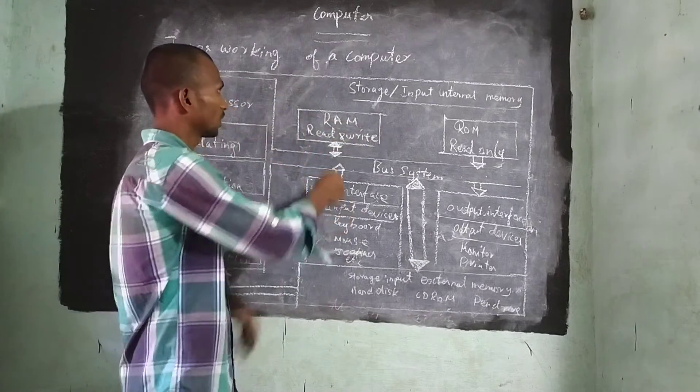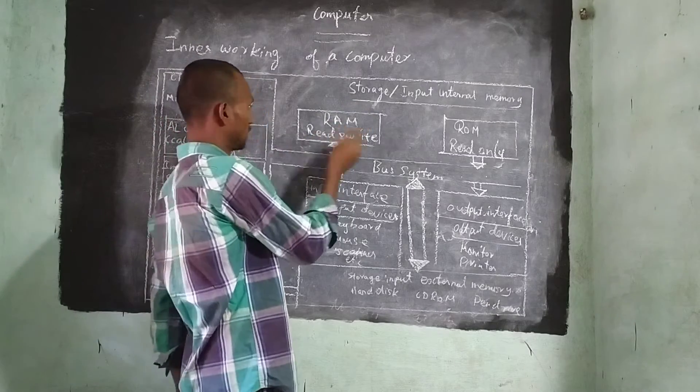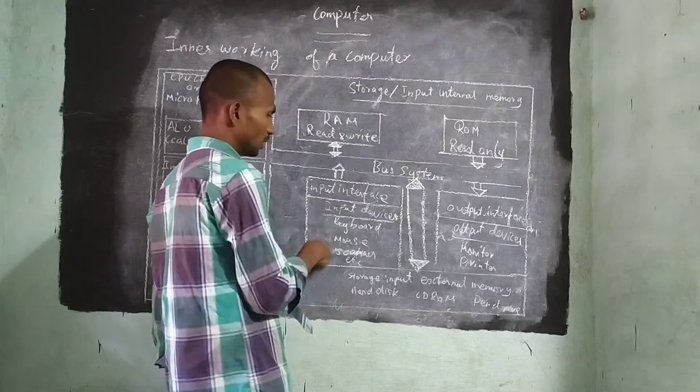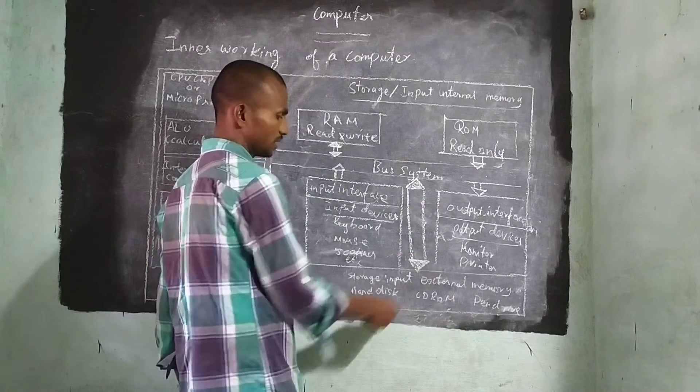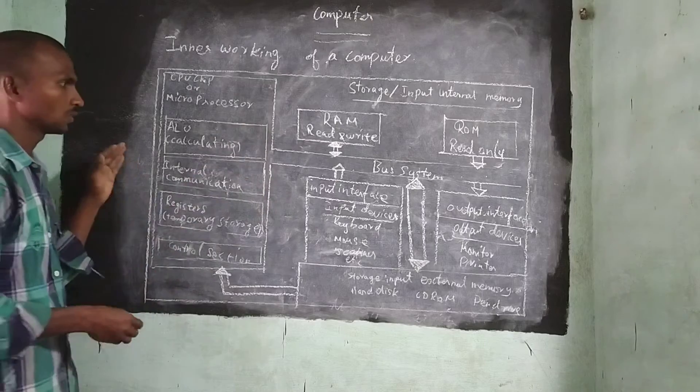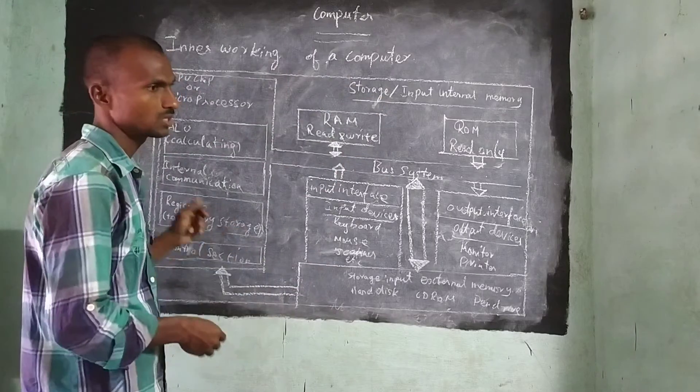This side we are having one more thing. What is this? RAM ROM. It also comes under the CPU only. RAM and ROM. Next, Input devices and output devices. Storage. Everything is inside the CPU only. It is the overall Computer system.